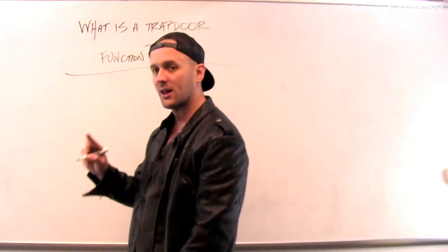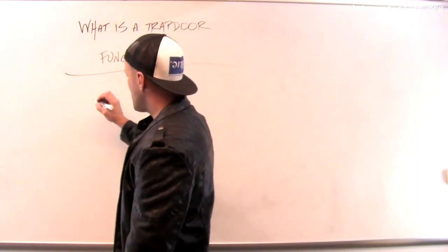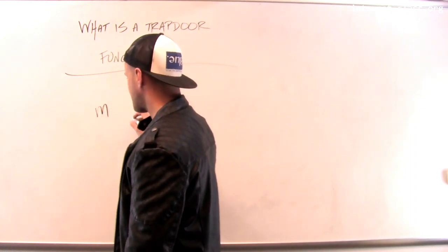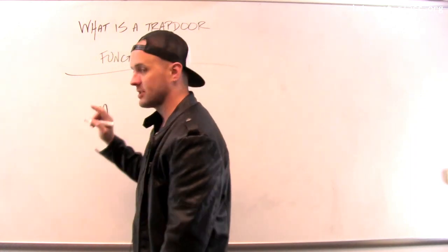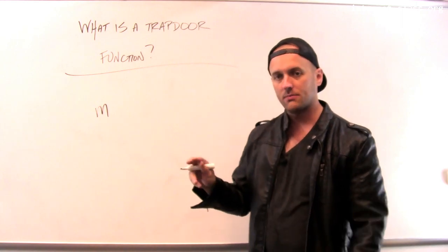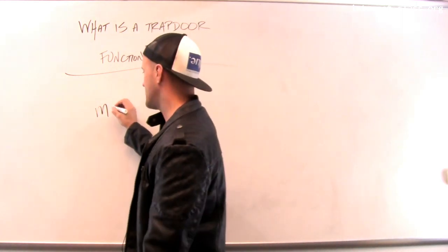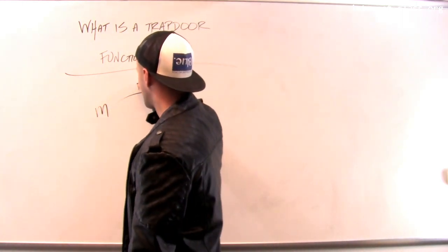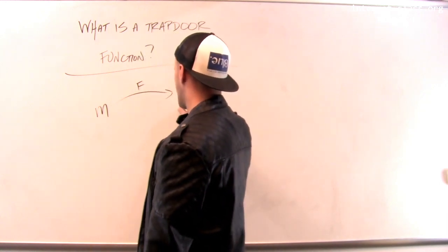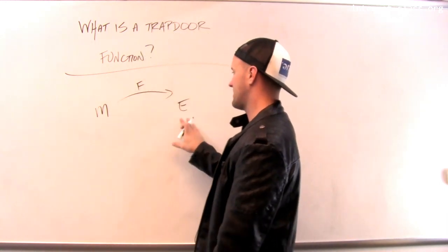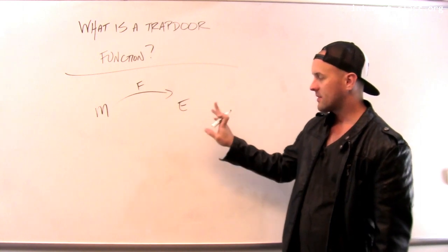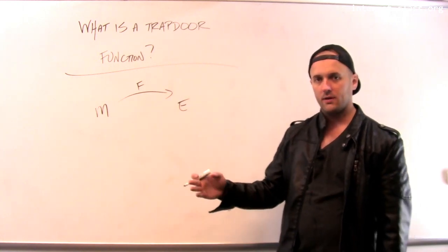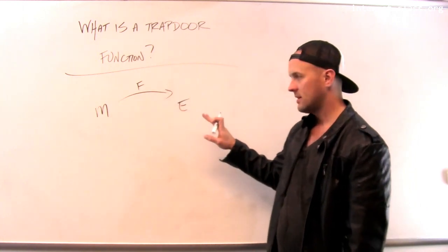A trapdoor function has the following properties. If I give you the input, let's say I call the input M, then a trapdoor function should be easy to compute on this input. So I can take M and I can use my function F and I can compute the result. Let's say the result is E. So that's the forward step. It's easy to compute the function.